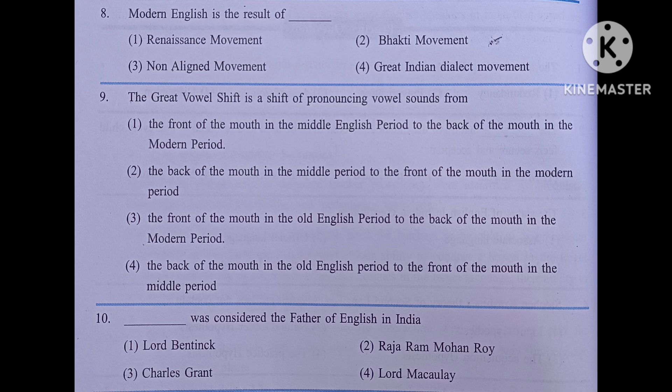The great vowel shift is a shift of pronouncing vowel sounds from: number one, the front of the mouth in the middle English period to the back in modern English; number two, the back of the mouth in the middle English period to the front in modern English; number three, the front in old English to the back in modern English; number four, the back in old English to the front in middle English. The answer is number two: the back of the mouth in the middle English period to the front of the mouth in the modern period.